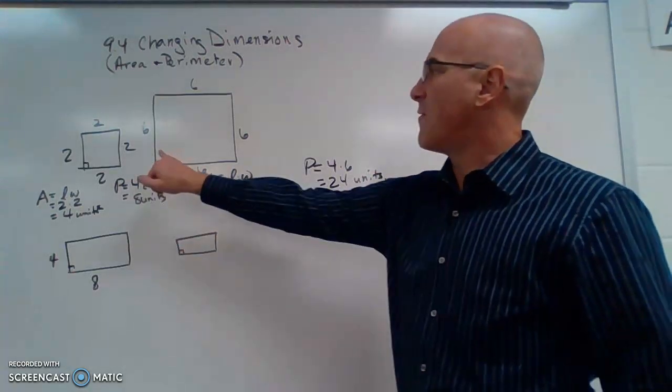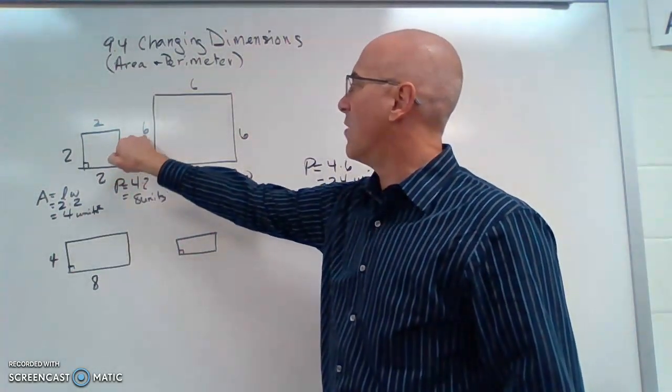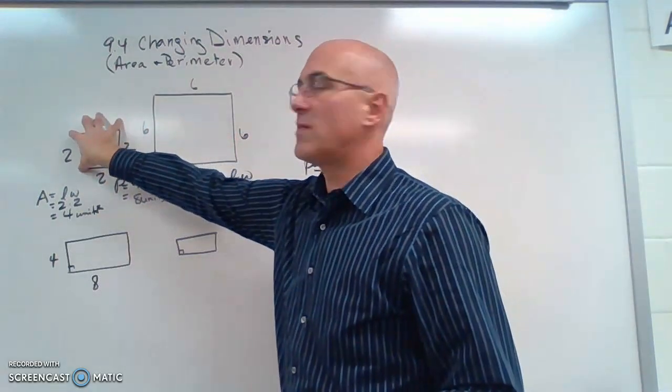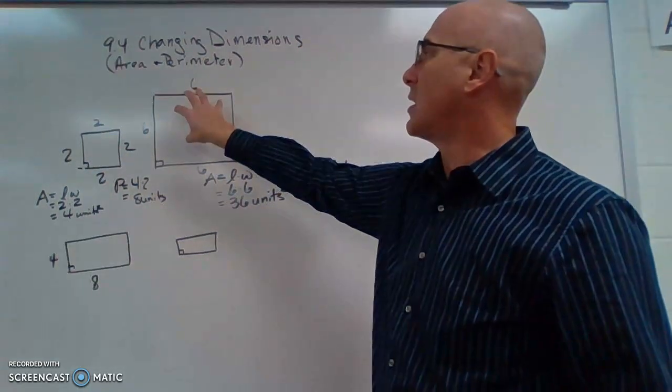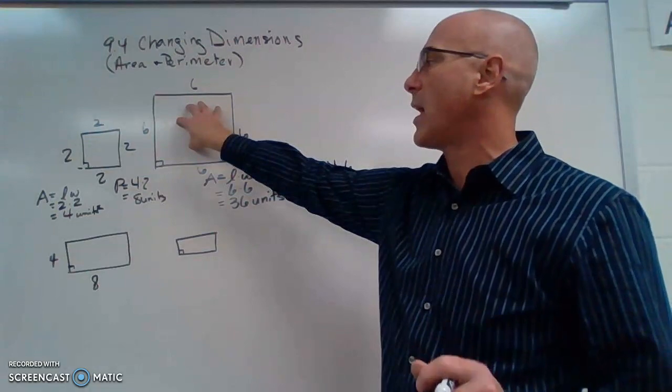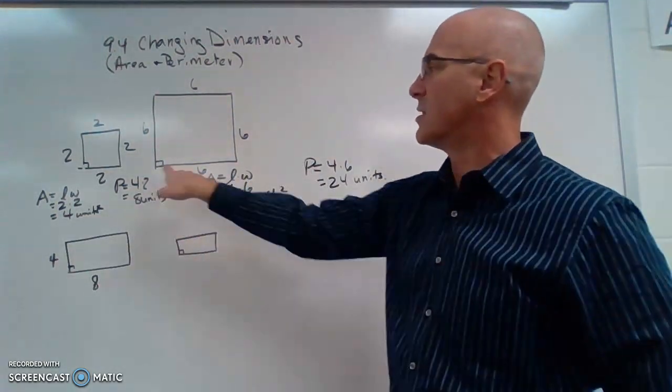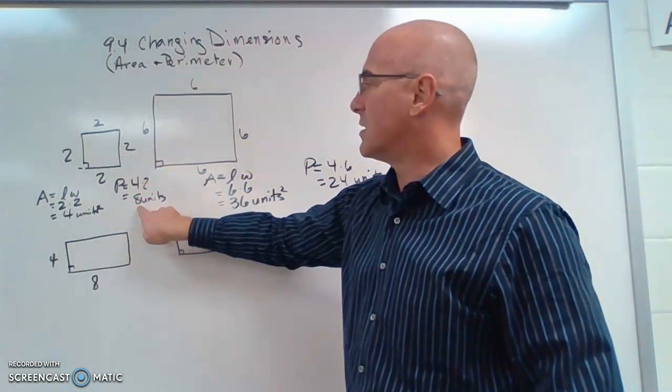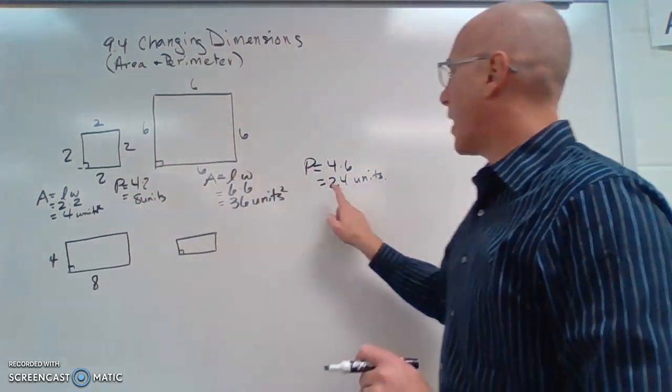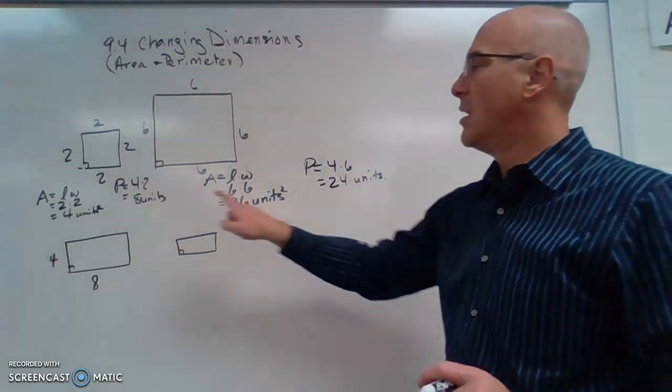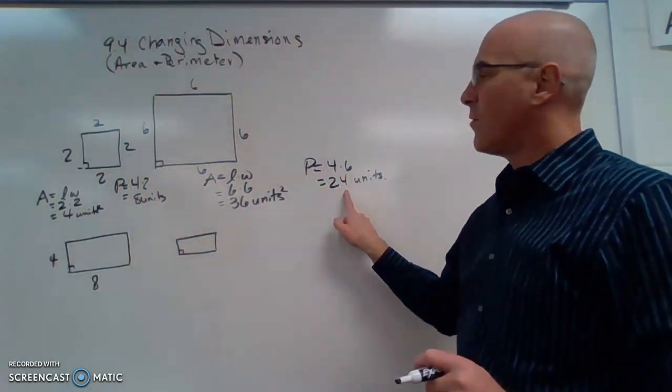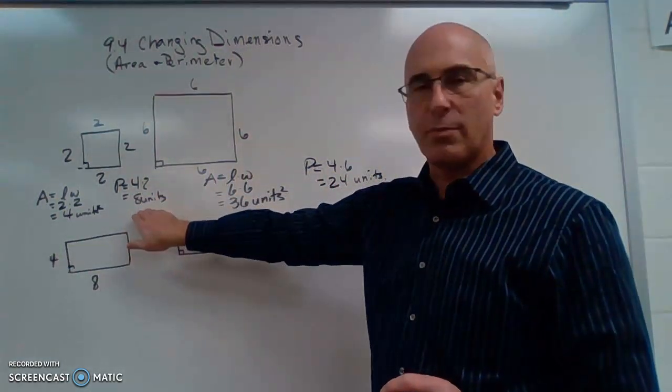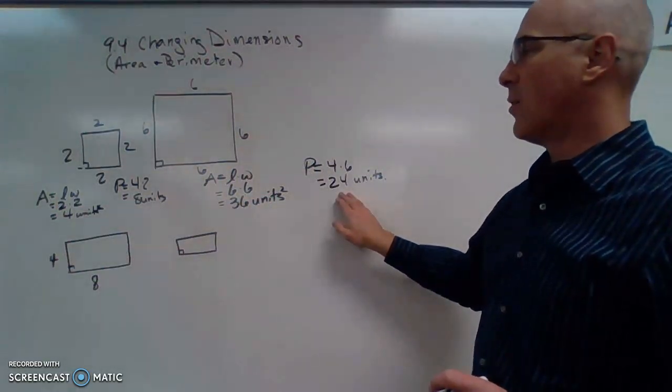So if I have a scale factor of 3, I'm multiplying each of these dimensions by 3 to get my new dimension. Look what happens. Let's look at perimeter first, the distance around. The small square is 8 units. The big square is 24 units. How is 8 related to 24? If I multiply 8 times 3, I get 24. So I multiplied it by 3.